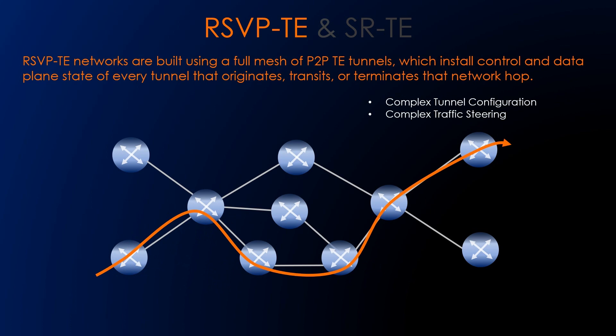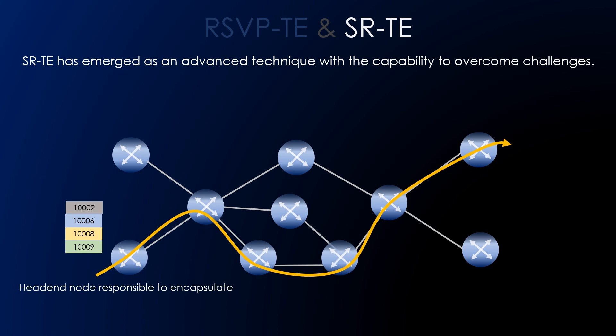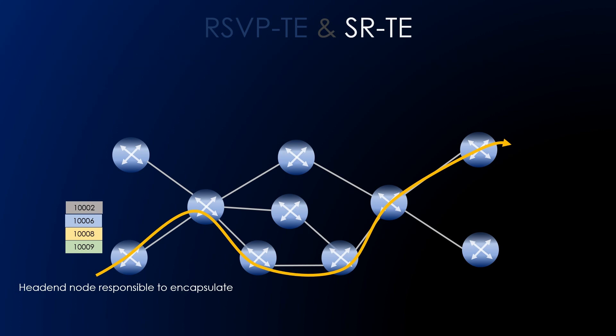In case of segment routing, SR has emerged as an advanced technique capable of overcoming these challenges. The SR architecture defines the concept of a segment, which identifies an instruction to execute by the network device. The head end is responsible for encapsulating the incoming packet with an ordered list of segments. The intermediate node only needs to process the packet according to the instruction specified in the segment list. One important application of SR-TE involves the computation and implementation of a segment list according to the intent of the network operator, to implement explicit paths and steer traffic. Benefiting from the source routing mechanism, intermediate per-flow states are eliminated, allowing SR-TE to achieve higher scalability.